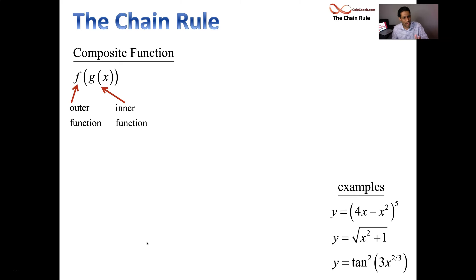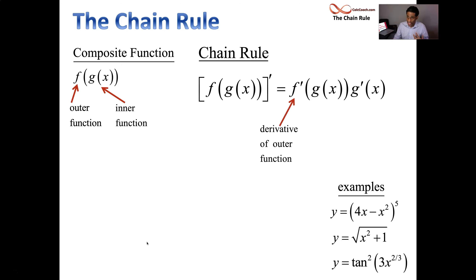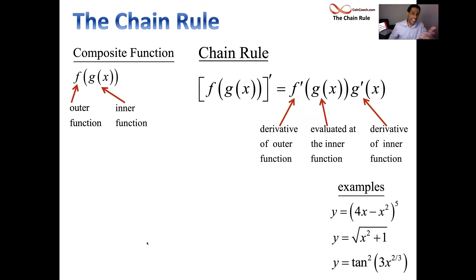What we have to do is figure out who is the inner function, who's the inside function, and who's the outside function. Once we identify that, then we can execute the chain rule. The chain rule says: the derivative of such a function is equal to the derivative of the outside function evaluated at the inside function, times the derivative of the inside function.